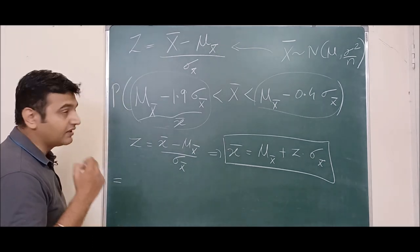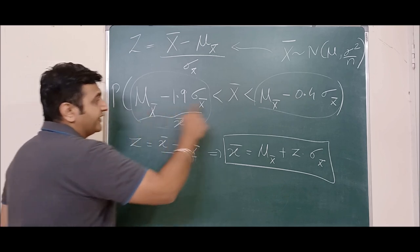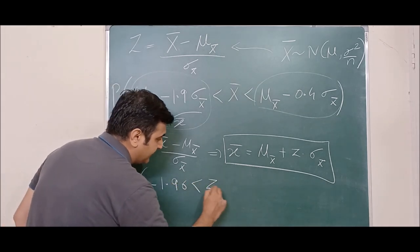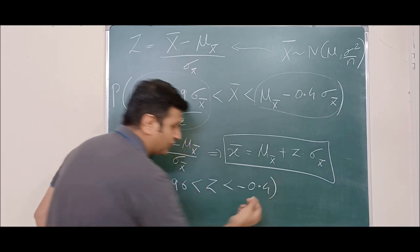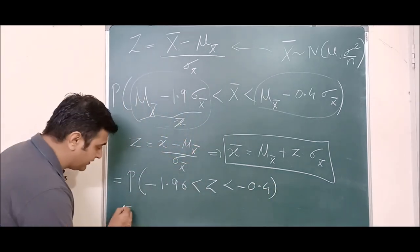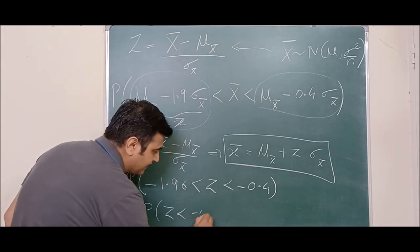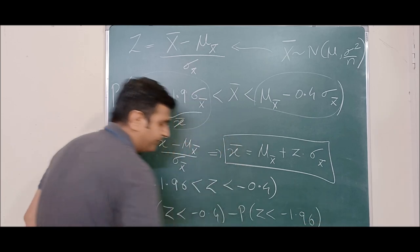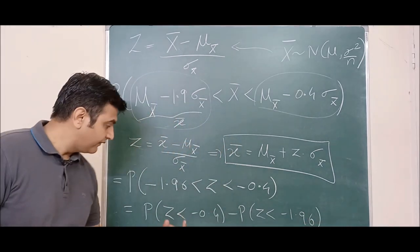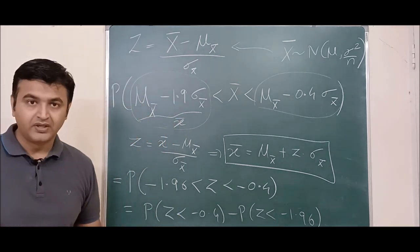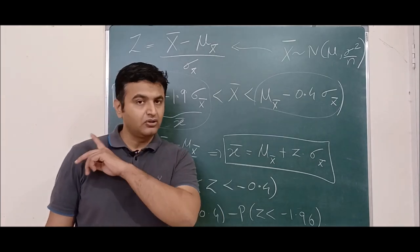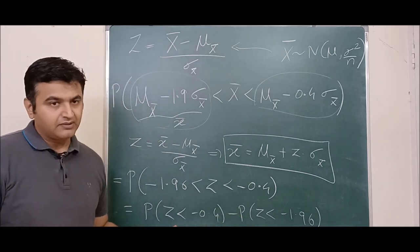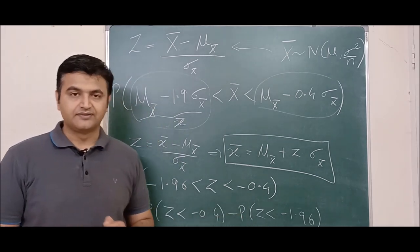This equals the probability of z less than -0.4 minus the probability of z less than -1.96. Open your z distribution table, find each probability, subtract to get the answer. If you have a doubt, you can ask in the comment section. That's the answer for the first question.